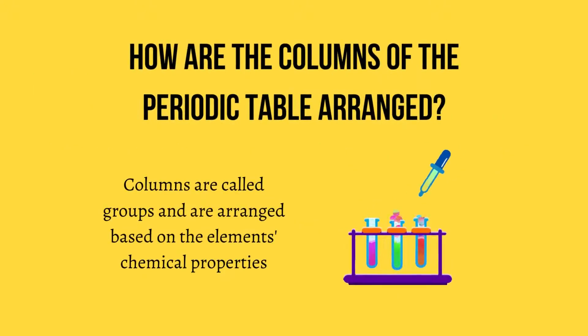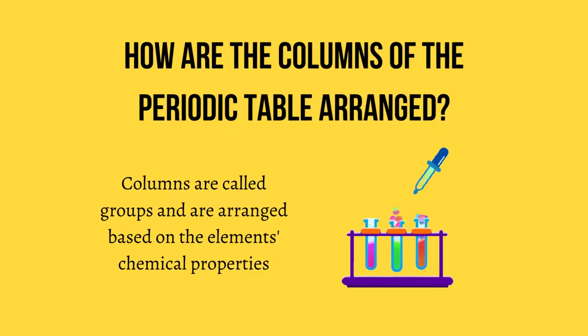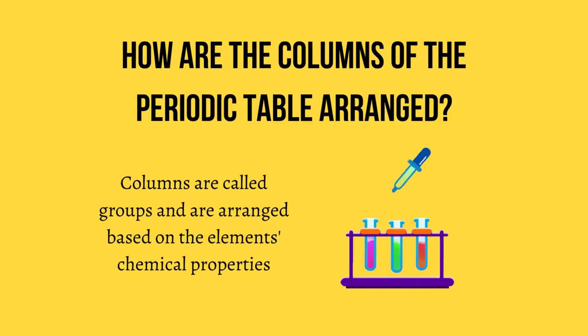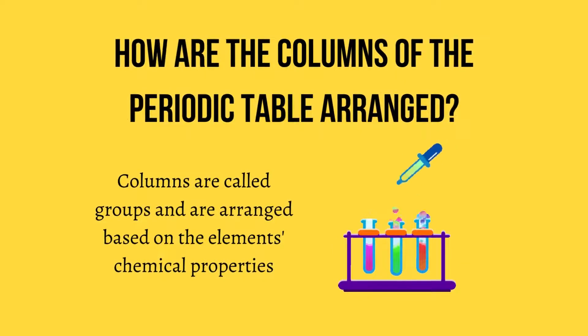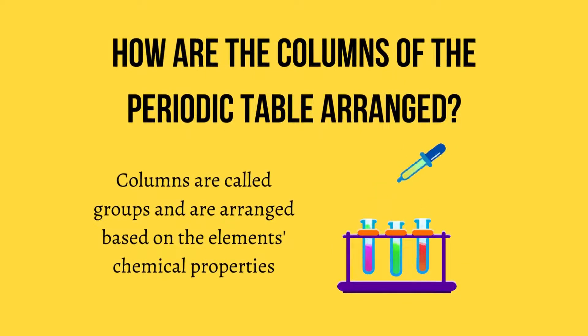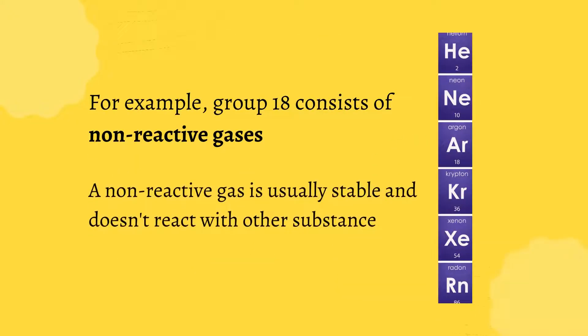How are the columns of the periodic table arranged? Columns are called groups and are arranged based on the element's chemical properties. For example, group 18 consists of non-reactive gases. A non-reactive gas is usually stable and doesn't react with other substances.